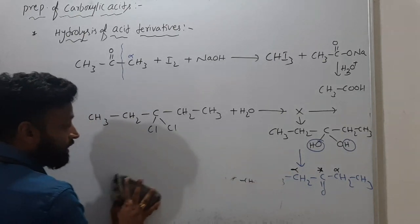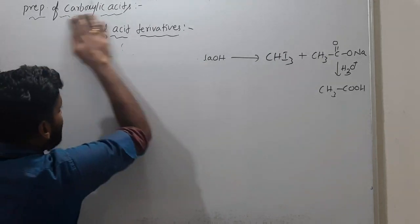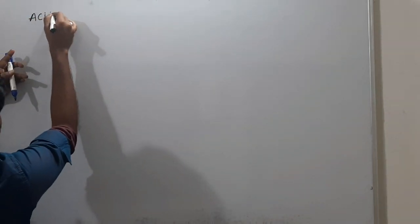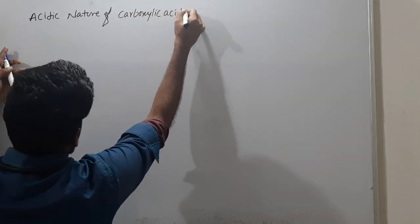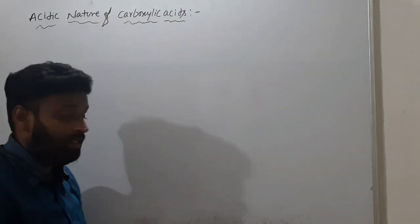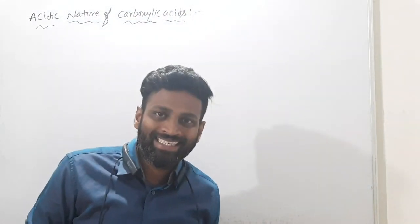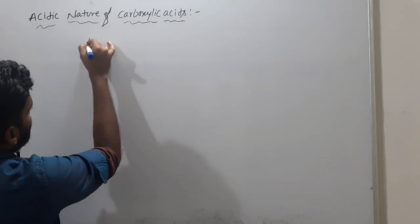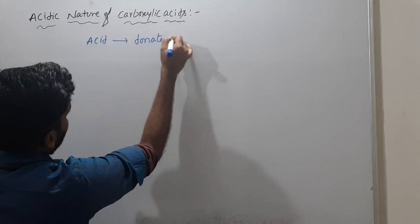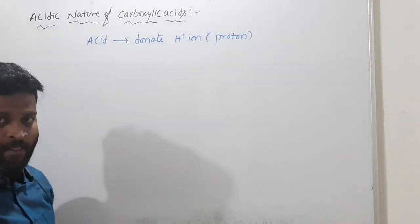These are the preparations of carboxylic acids — very important. Practice applications after understanding all these preparations. Next, let's see acidic nature of carboxylic acids. Acidic nature is very important. They will ask: what is the correct order of acidic strength, which is more acidic, which is less acidic.